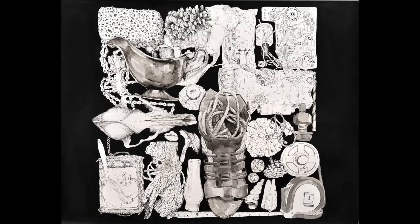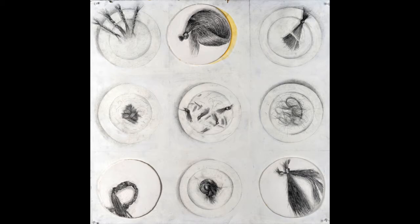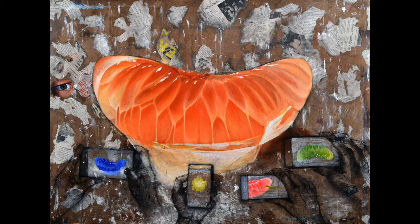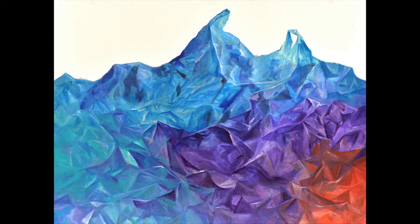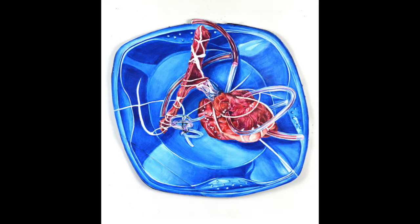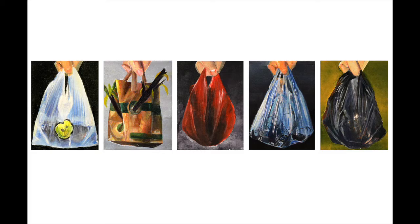In the visual arts, there are two different types of texture: implied texture and tactile texture. Implied texture is when we use drawing or painting to show the way the surface of something looks like it feels. Implied texture is created using line, mark making, shape, and shading.